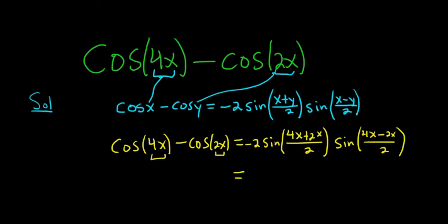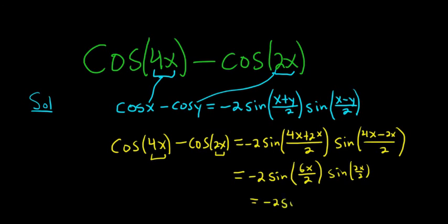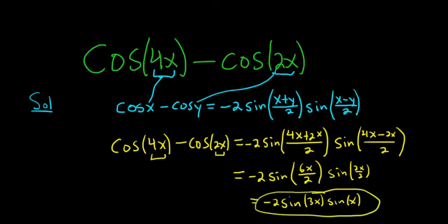This is equal to negative 2 sine of 6x over 2, because 2x plus 4x is 6x, and then sine of 2x over 2. This is equal to negative 2 sine of 3x — since 6x over 2 is 3x — and 2x over 2 is simply just x. And that is the final answer. Hope that helps.